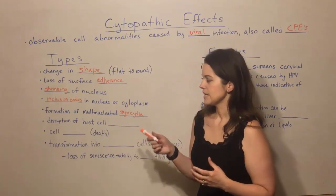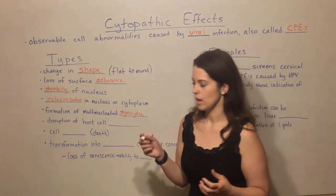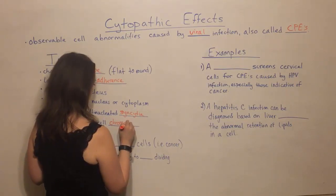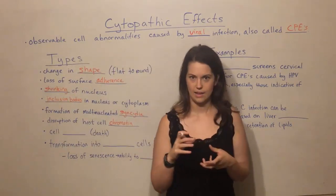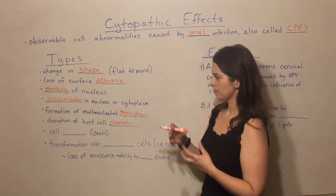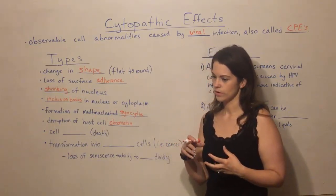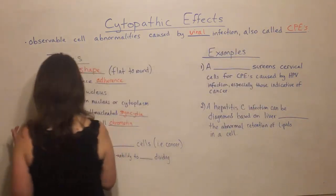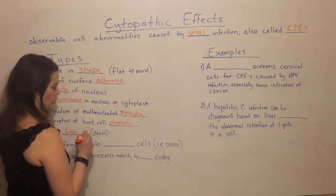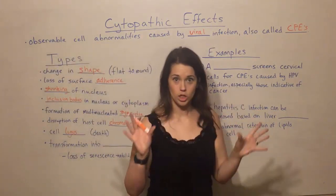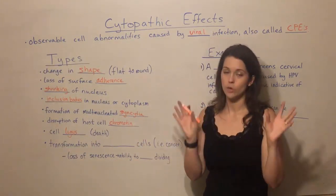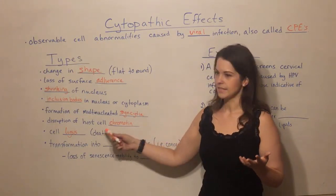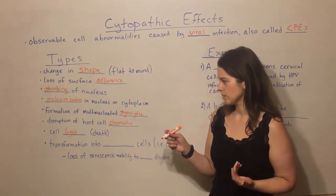Another possible CPE is disruption of host cell chromatin — when the host cell's DNA becomes disrupted and disorganized. Another one is cell lysis. Lysis simply means to burst open or burst apart, so cell lysis is when a cell breaks open. This is cell death — the cell dies when it undergoes lysis.